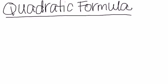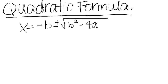It is especially useful when your quadratic equation is not factorable. The quadratic formula is x equals the opposite of b plus or minus the square root b squared minus 4 times a times c all over 2 times a.